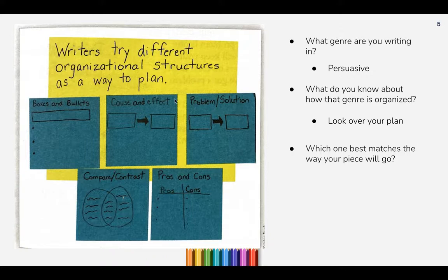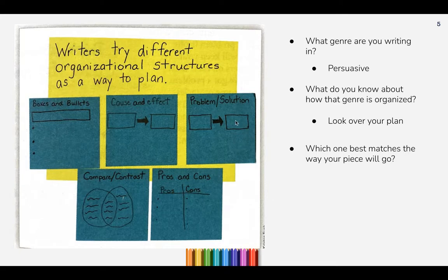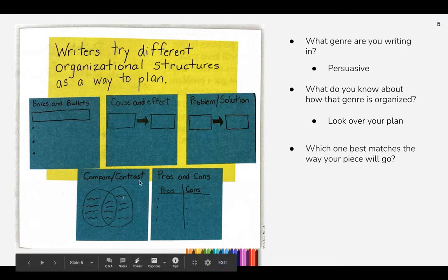If you look at this next organizational structure, it's called problem and solution. There is a problem and here is the solution to fix it. You can even go further to state the research behind why the solution will help the problem.